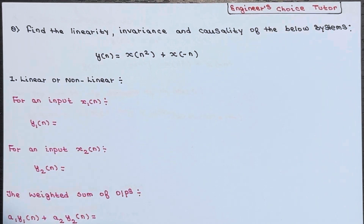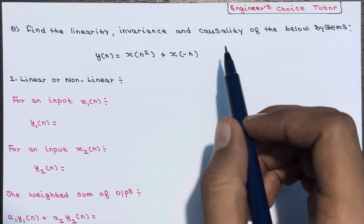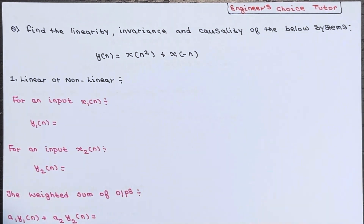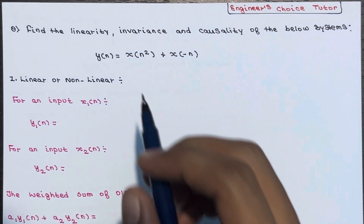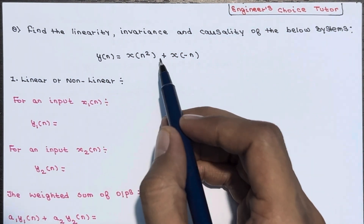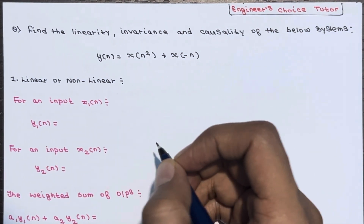Hi everyone. In this lecture we will find the linearity, invariance, and causality of the below system. The system equation is given as y of n equals x of n squared plus x of minus n.